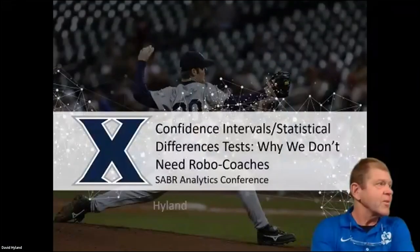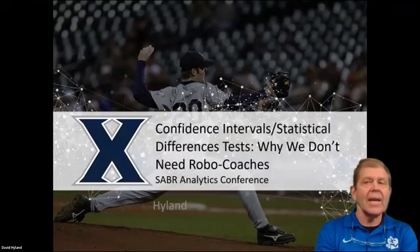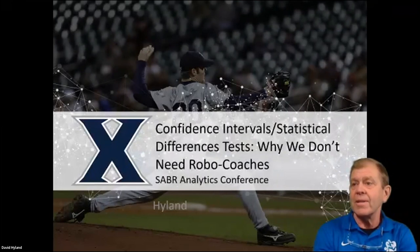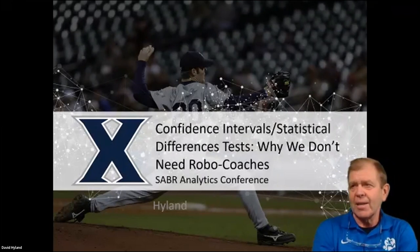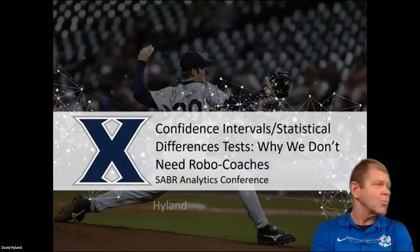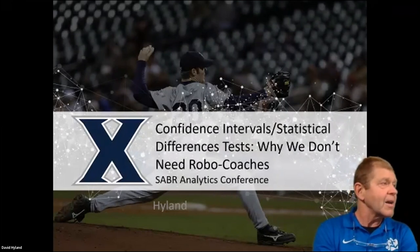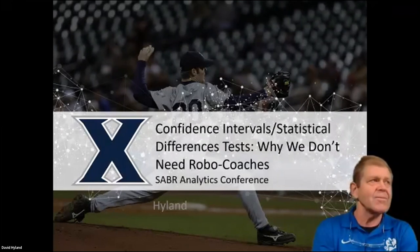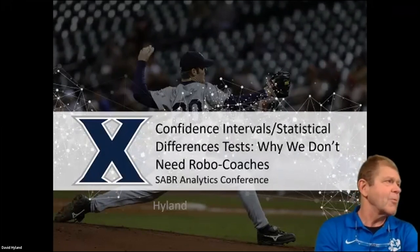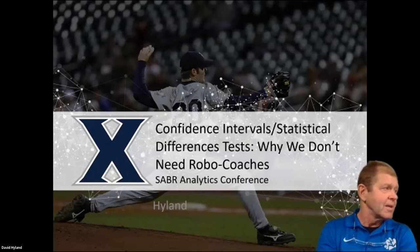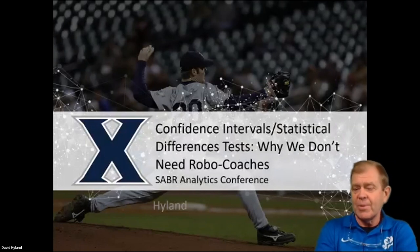What we're basically going to talk about is what to do with the data once you've got it. The name of the presentation is confidence intervals and statistical difference tests. One of the subtitles is why we don't need robo coaches. Hopefully your conclusion at the end will be that there's some things we can play with, but it only gives part of the picture. A lot of the statistics we look at don't tell us everything, and we need to think about what it is we're actually measuring and testing, and what the limitations are.